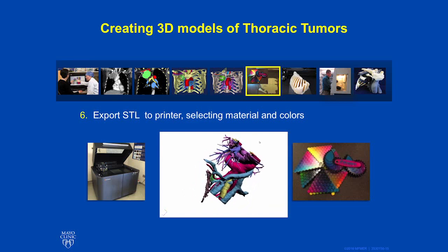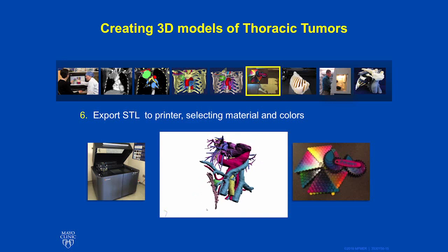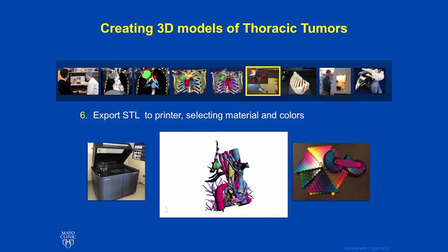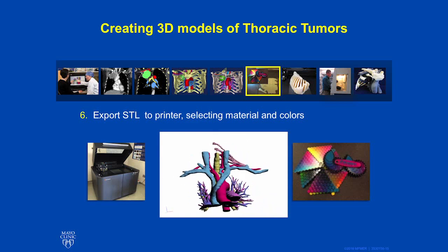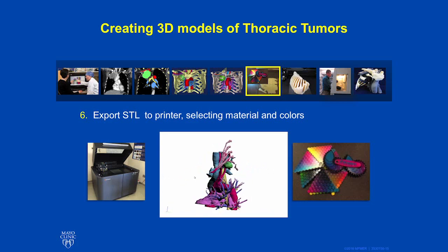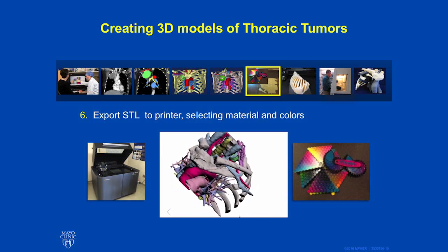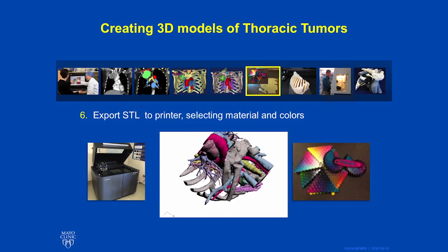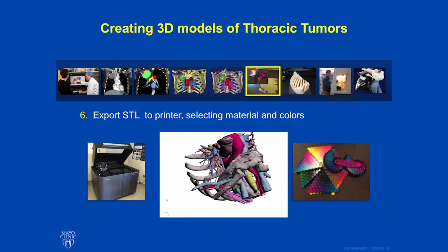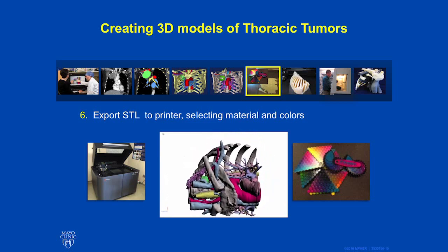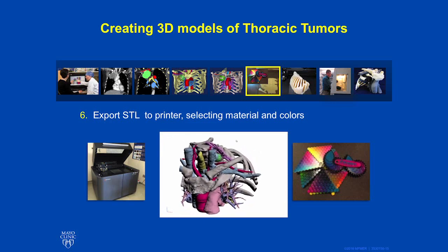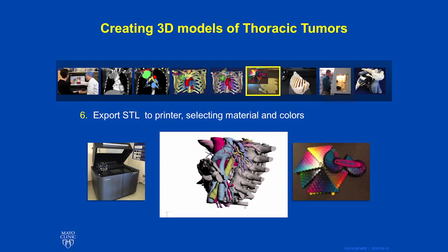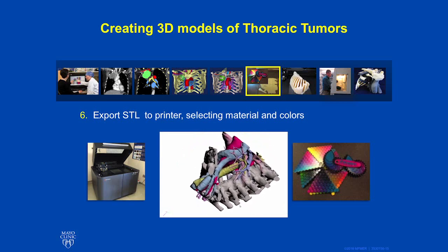Once we export the STL file to the printer, we then select material and colors that we would like to use. The picture on the bottom right shows the multiple different color palettes that can be selected. Only one color palette can be used, but all of the colors on that triangular palette can be selected. We can select material that is soft and movable, or material that is hard and plastic-like. The different types of material will be custom-made and chosen by the surgeon based on the need or the intervention planned. Color-coding the models is typically done using red for the aorta, blue for the vein, and different colors customized to display things like a Pancoast tumor, with the brachial plexus in yellow.